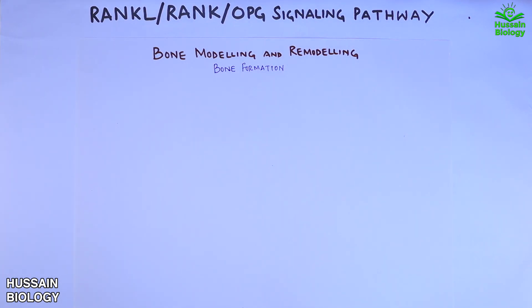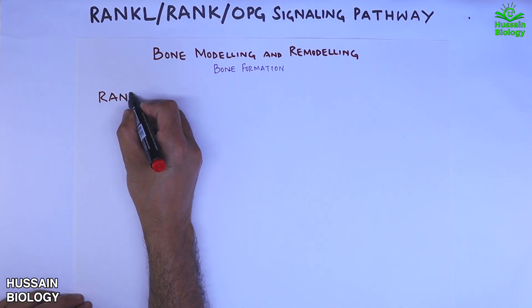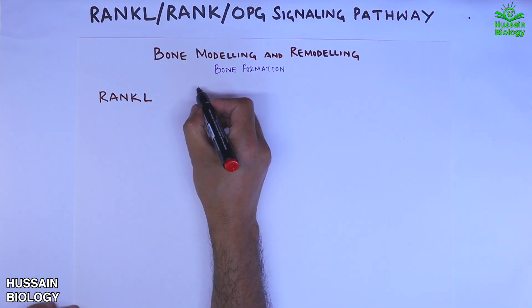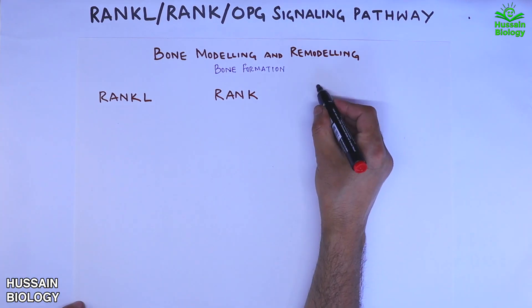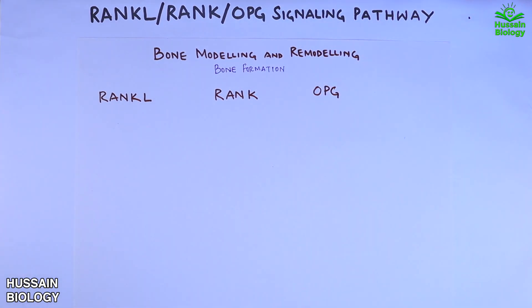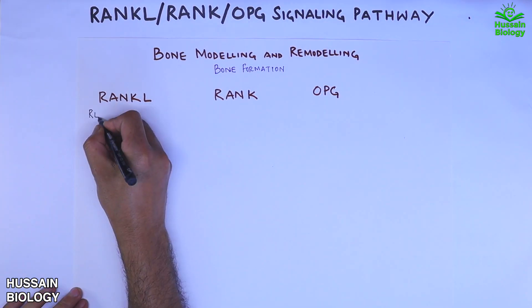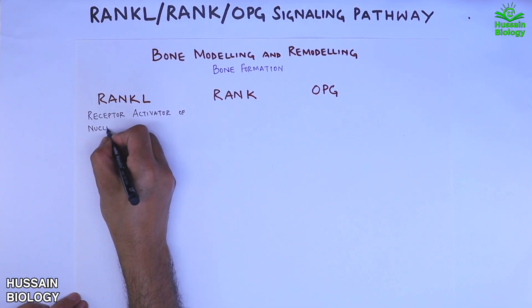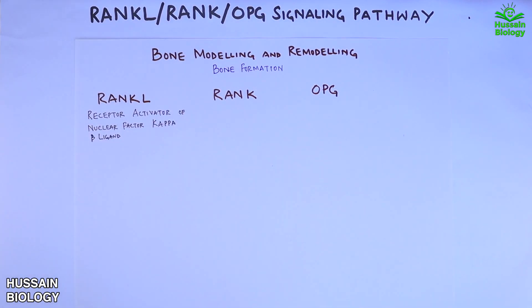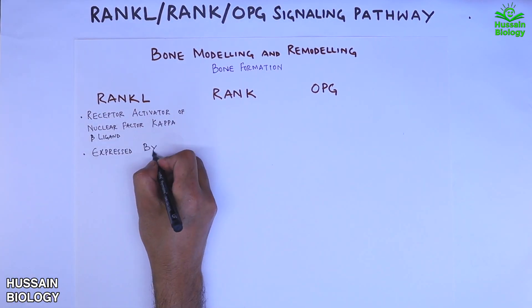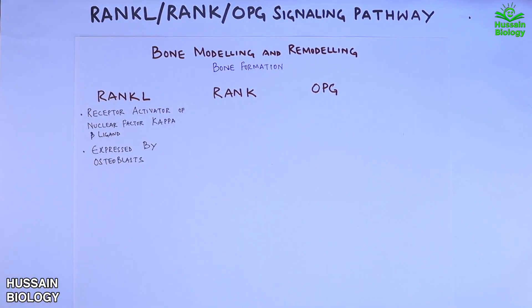First, let's look at three important proteins or factors we are going to see in the signaling pathway. First is RANKL, second is RANK, and third is OPG. RANKL is the Receptor Activator of Nuclear Factor Kappa B Ligand, and is expressed by osteoblasts.